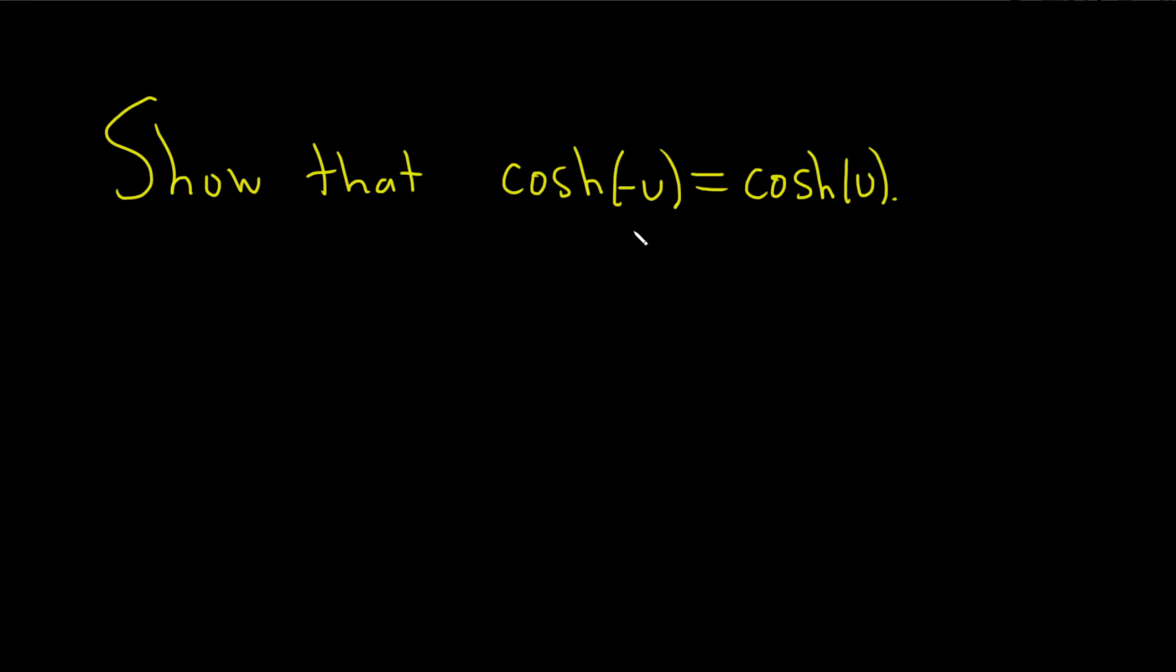This basically shows that cosh is what's called an even function. We're basically proving that cosh is even. That's the definition of even by the way. A function is even if you have this property and this is true for all x. If you have this then you say the function is even.